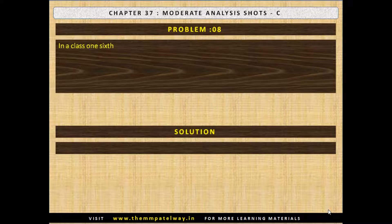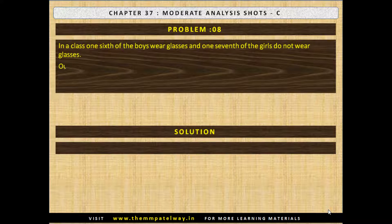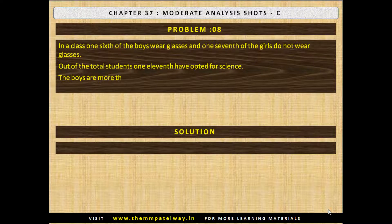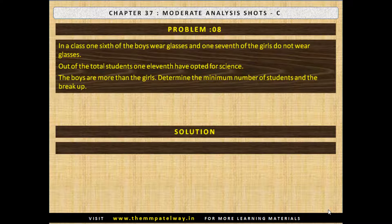Problem No. 8. In a class, one sixth of the boys wear glasses and one seventh of the girls do not wear glasses. Out of the total students, one eleventh have opted for science. The boys are more than the girls. Determine the minimum number of students and the breakdown. The solution is there are 30 boys and 14 girls, totaling 44 students.